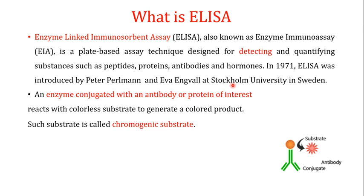In ELISA, an enzyme is conjugated with an antibody — this is the antibody to which an enzyme is conjugated — or in another case, the enzyme can be conjugated with your protein of interest. In the direct, indirect, and sandwich ELISA types, the enzyme is attached to an antibody, and this is known as the antibody conjugate.